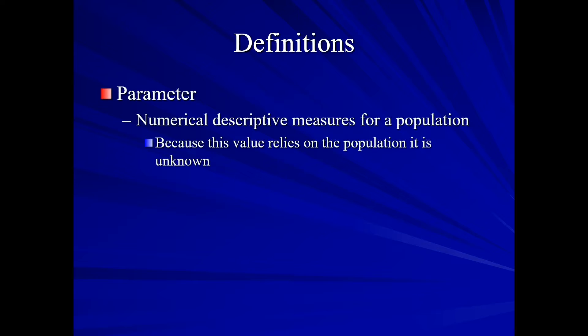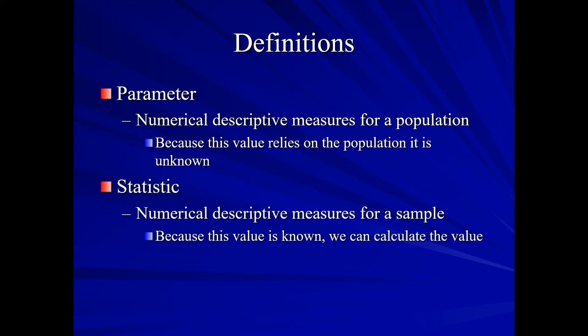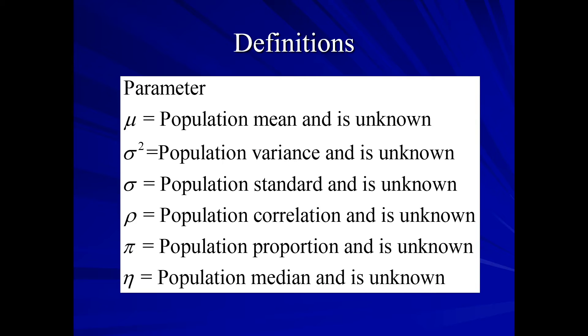Our parameter. Well, this does go with the population. It's a numerical descriptive measure for a population. However, because our population value is unknown, our parameter value is also unknown. And then we have a statistic. This is our numerical descriptive measure for our sample. We know the value of the sample. Therefore, we can calculate the value of the statistic. Now, our parameter is going to be denoted with Greek letters. Mu will be our population mean. It's unknown. Sigma squared is our population variance. It's unknown. Sigma is our population standard deviation and it's unknown. Rho is our population correlation and it's unknown. Pi is our population proportion and it's unknown. Eta is our population median. It's unknown. Now, a quick note here. Pi is sometimes written as p.